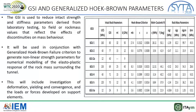The GSI approach will be used in conjunction with the generalized Hoek-Brown failure criterion to generate non-linear strength parameters for numerical modeling. This will include investigation of deformation, yielding, convergence, and the loads or forces developed on support elements. In the table, you can see the various rock mass parameters like deformation modulus and compressive strength. EGU-1 is the strongest geological unit for the gneiss, and EGU-5A at the bottom represents the fault zone with the lowest strength characteristics.